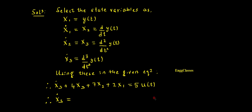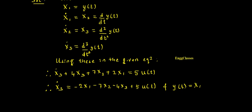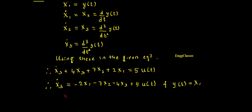Therefore, X3-dot equals — taking all terms to the right-hand side — minus two times X1, minus seven times X2, minus four times X3, plus five times u(t). This is one of the equations. And y(t) is written as X1.